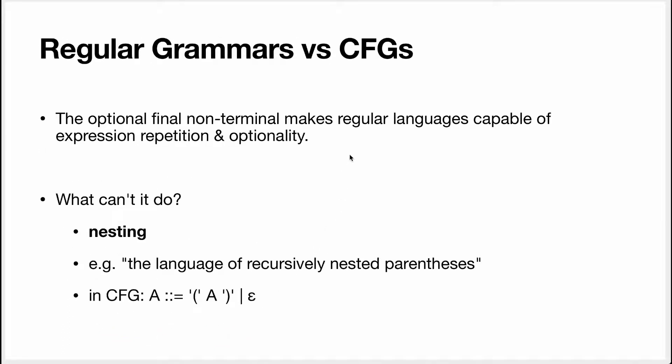The non-terminal at the end of the production rules in regular grammars is used to express repetition and optionality. So what can't regular expressions express that CFGs can express? Well, a very simple example is nesting. For instance, the language of recursively nested parentheses. I've written the CFG here; it's very simple. Note that this is also a valid peg, so this is not a palindrome language. The peg for it is perfectly valid.